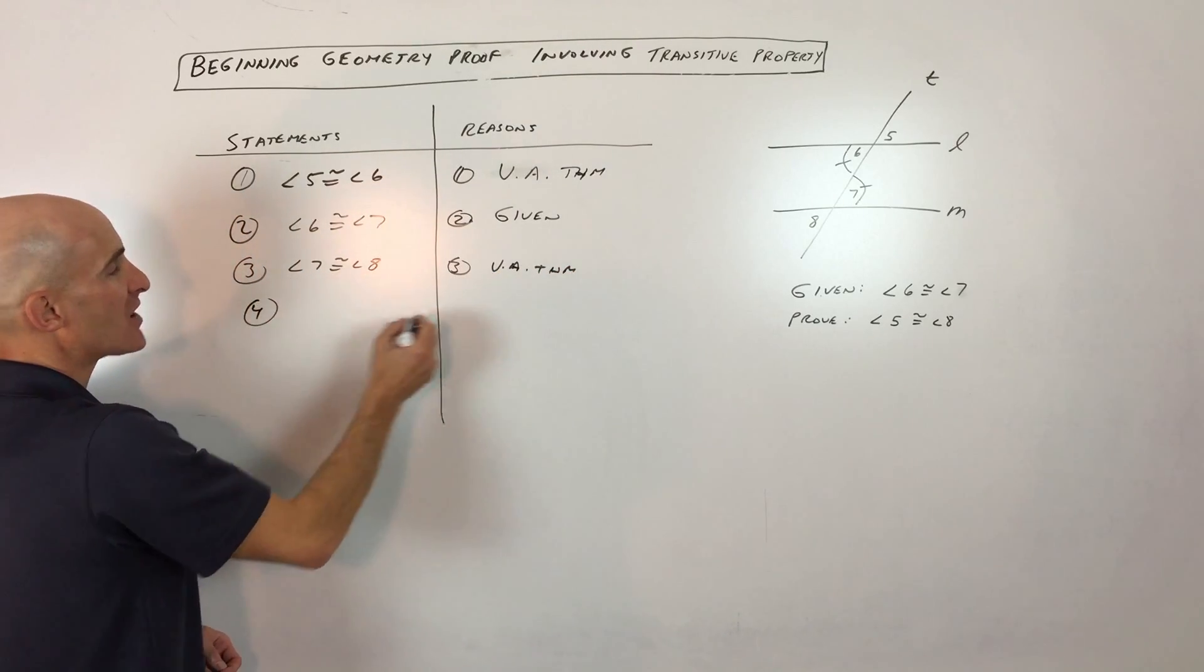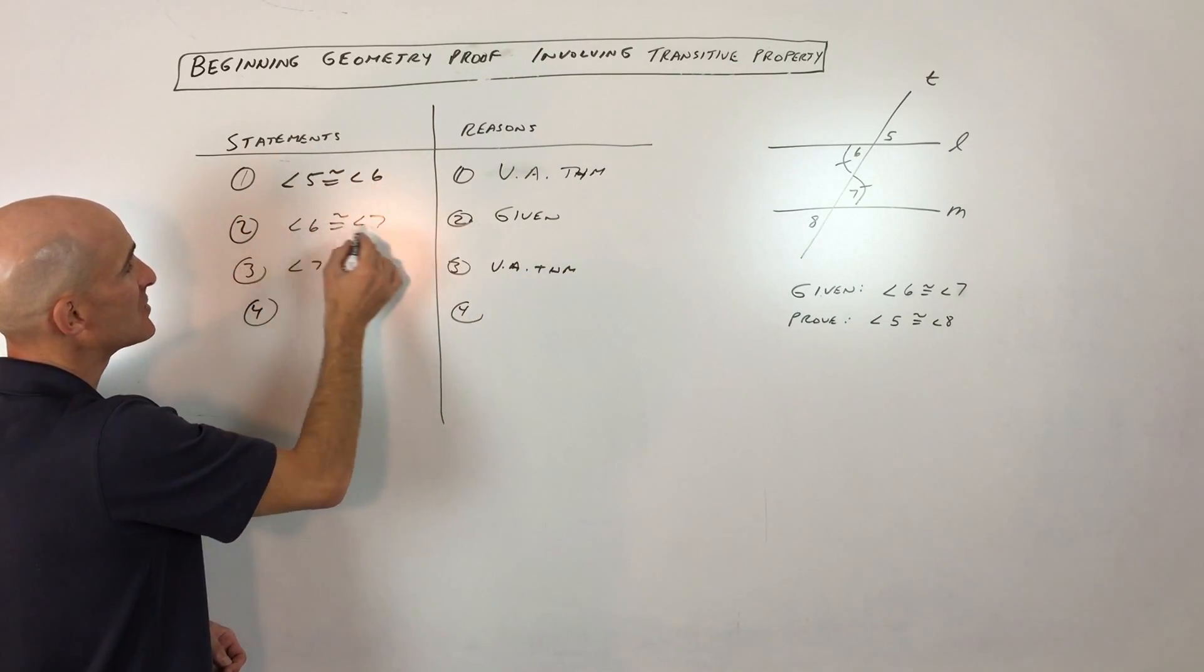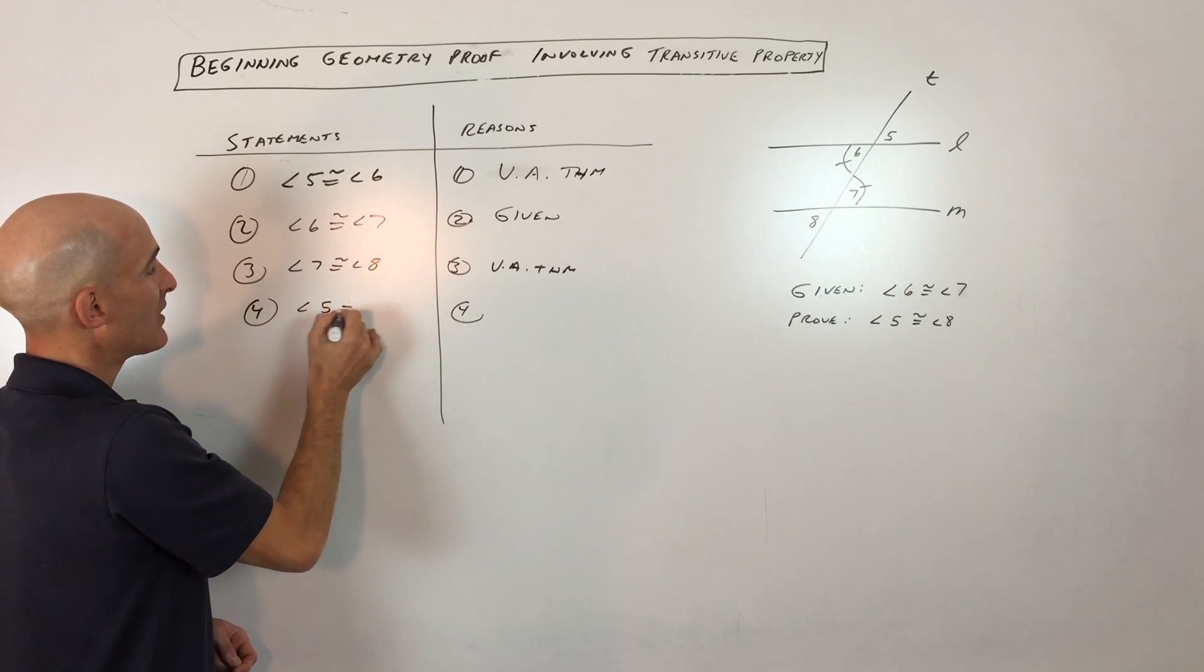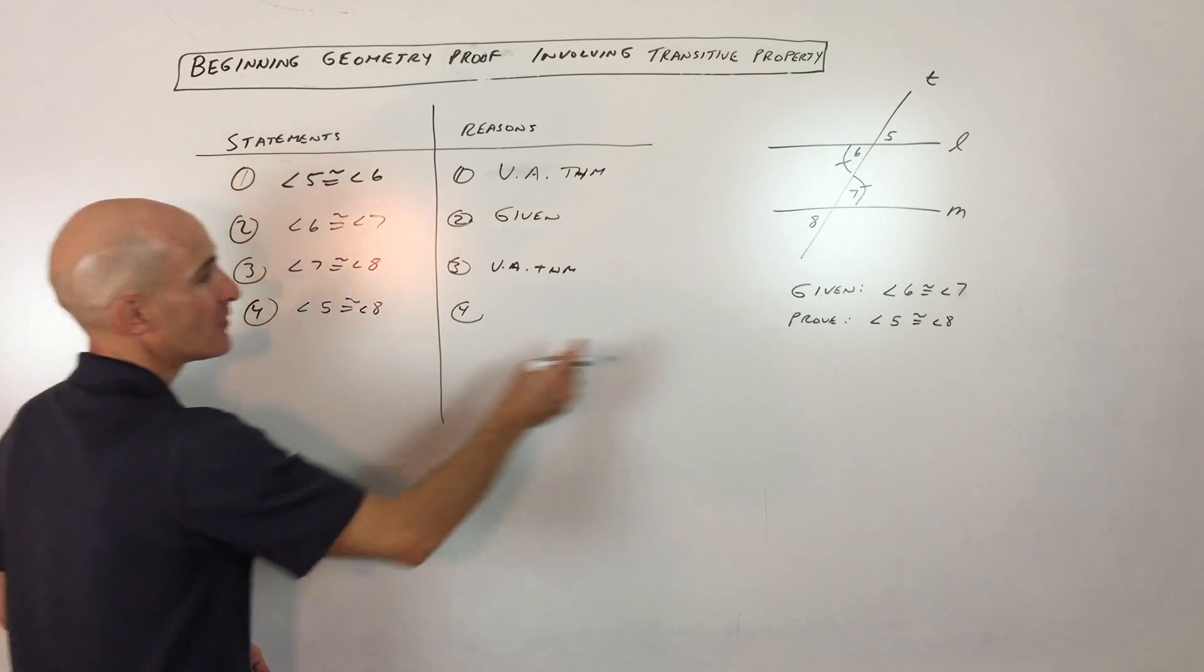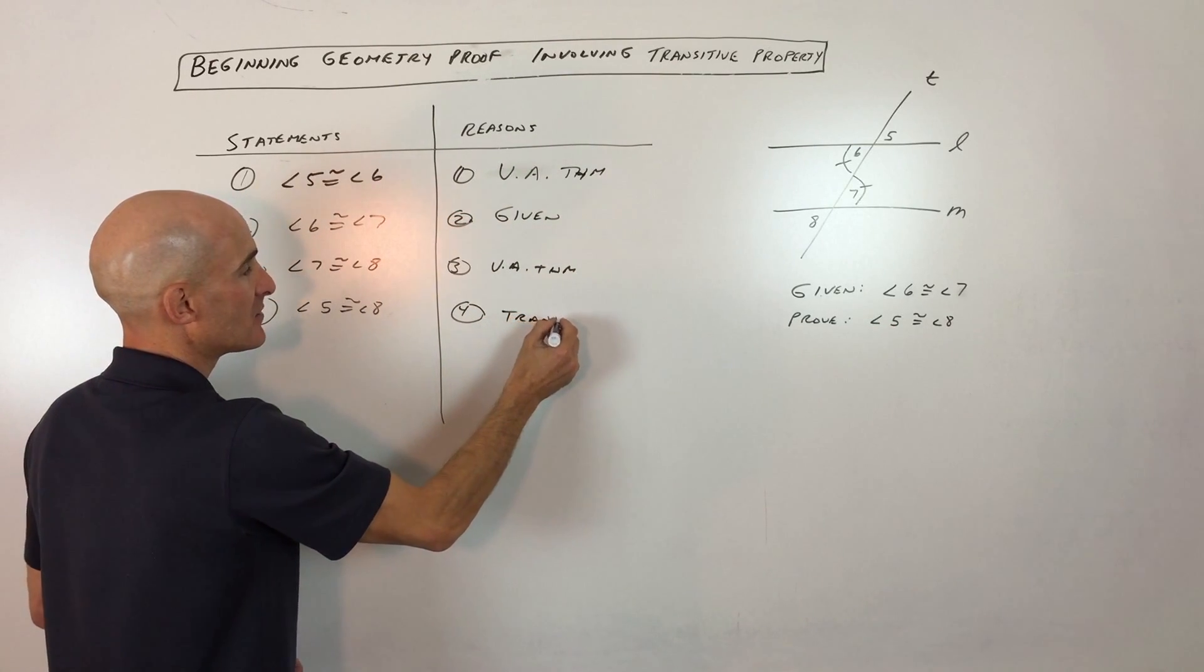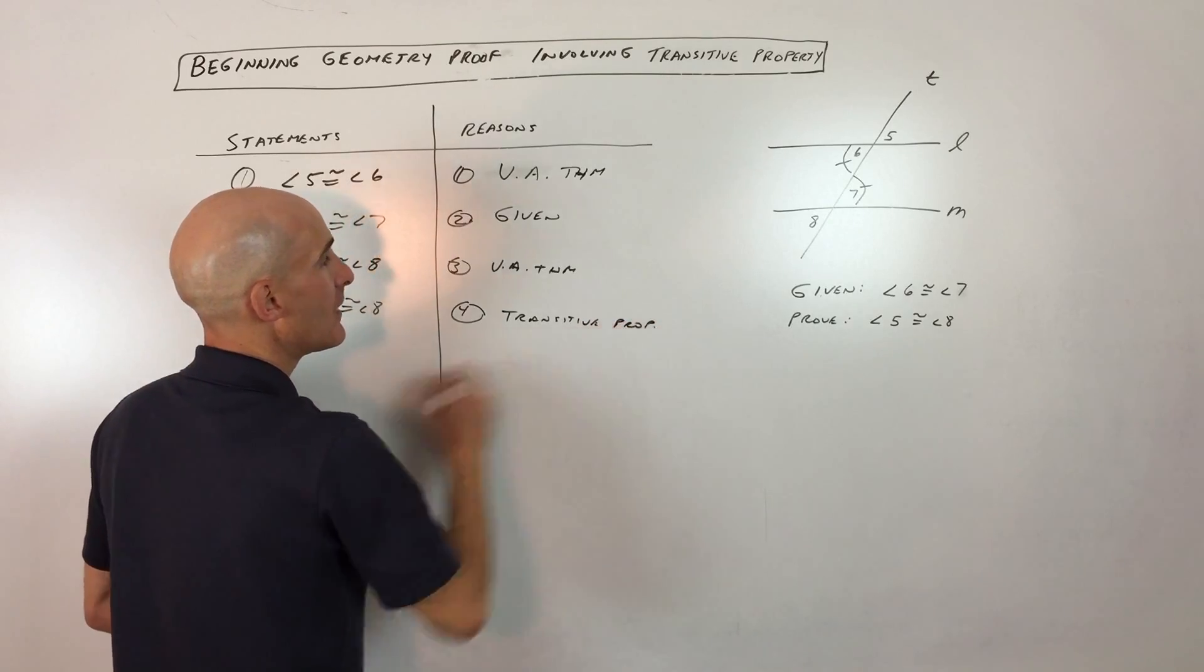And then the last step, number four, is what we talked about at the very beginning about using the transitive property. If 5 is equal to 6 and 6 is equal to 7 and 7 is equal to 8, 5 will be equal to 8. And that's what we were trying to prove. That's our last step. And the reason, again, was the transitive property. And that's it.